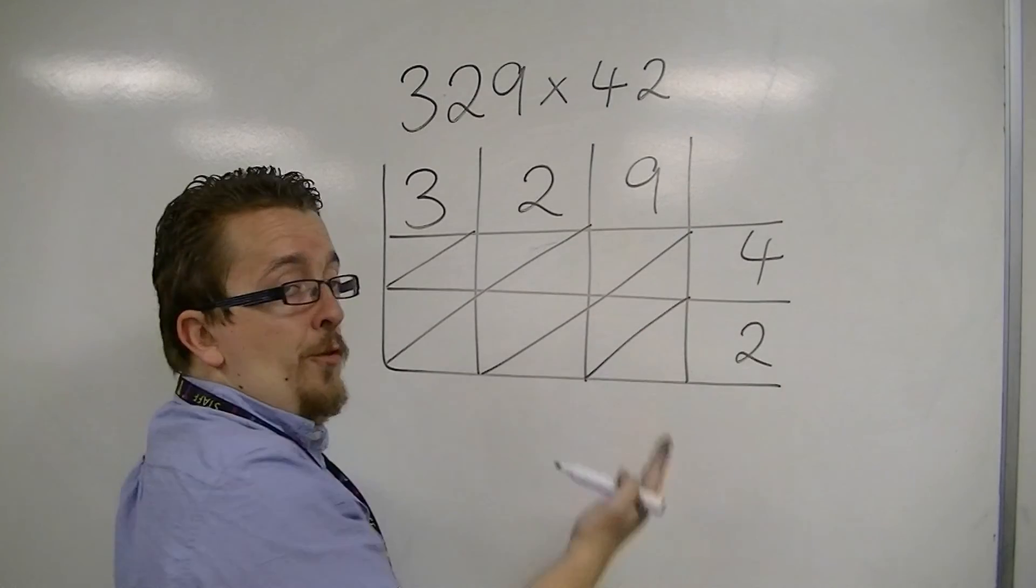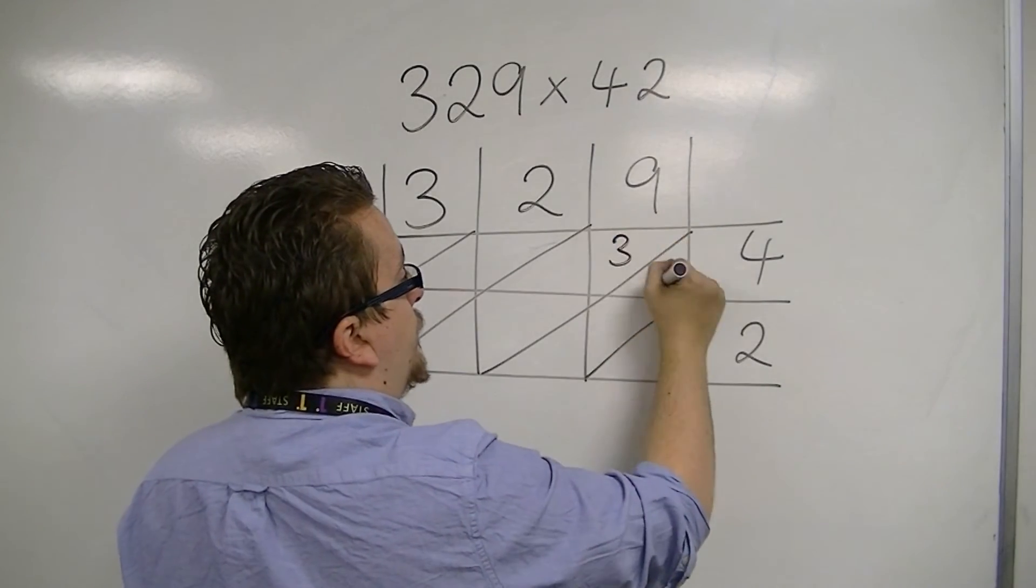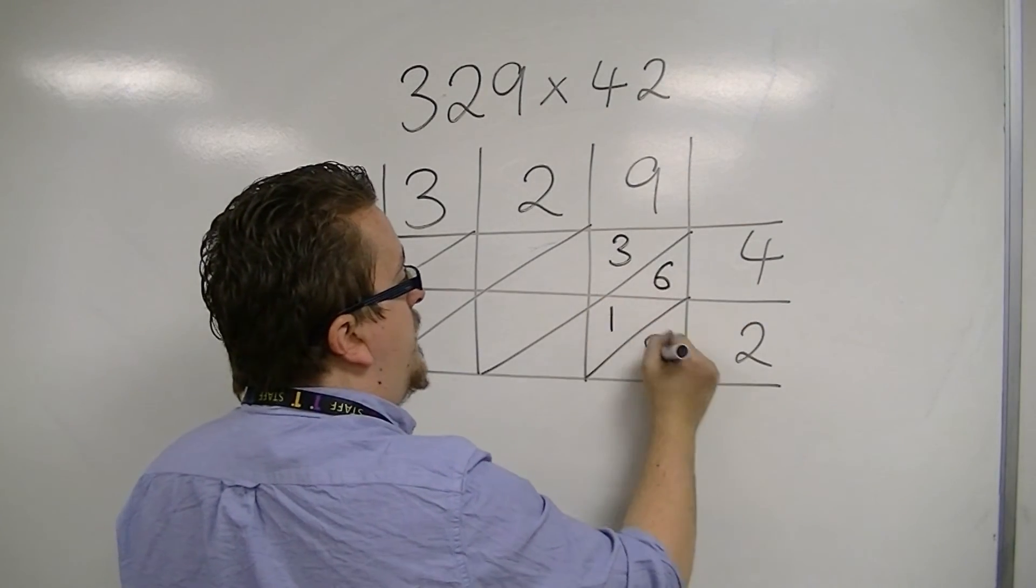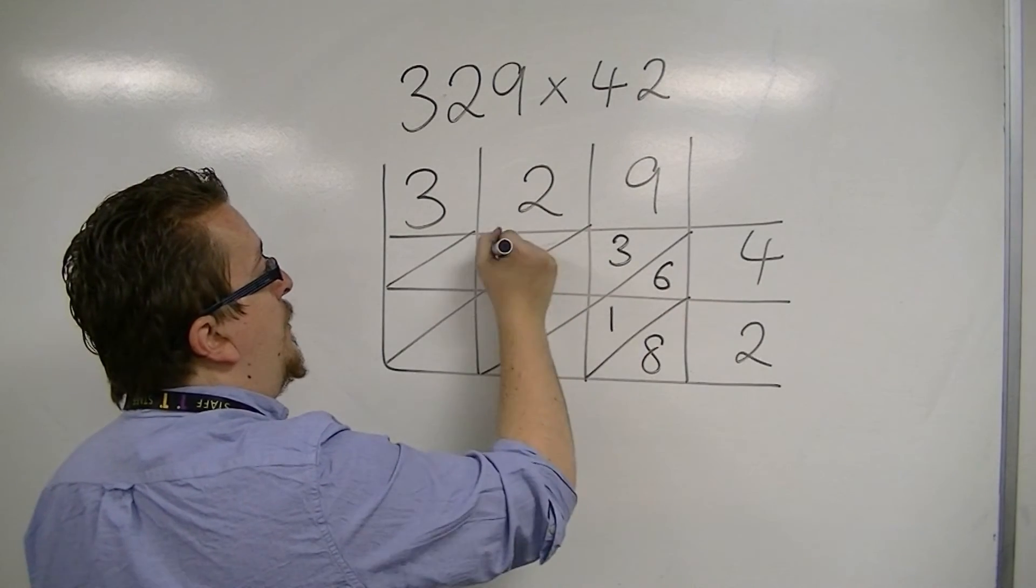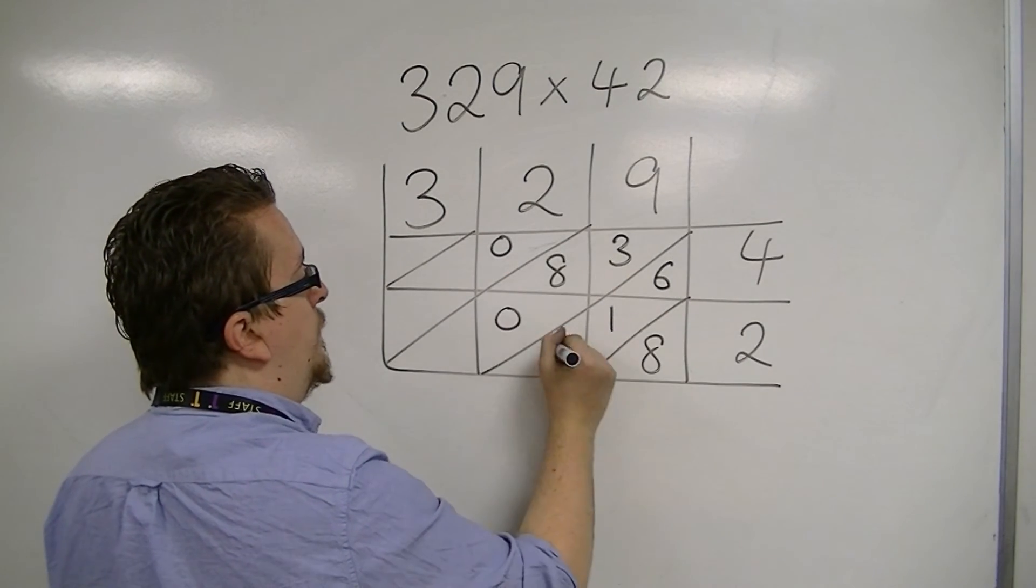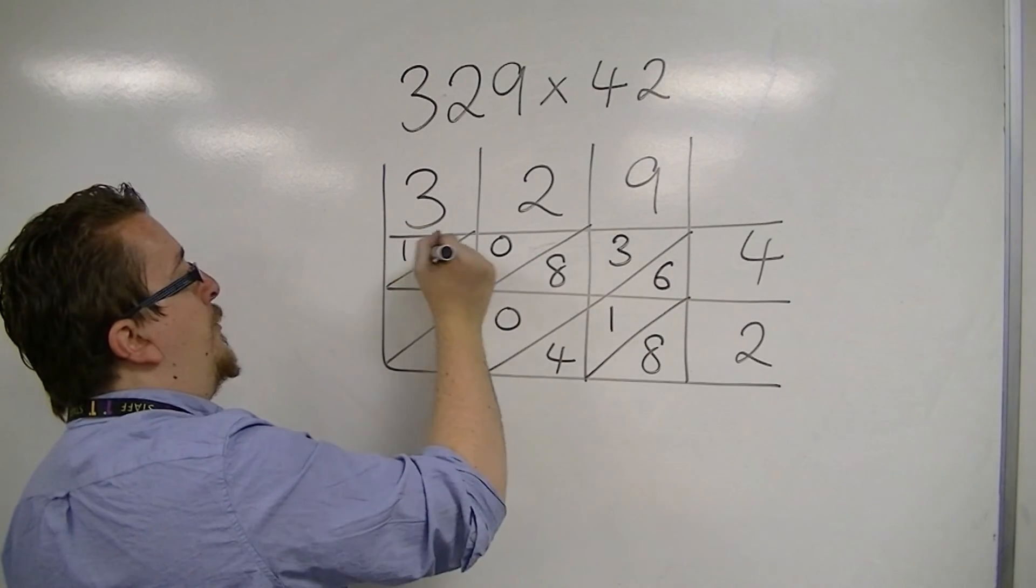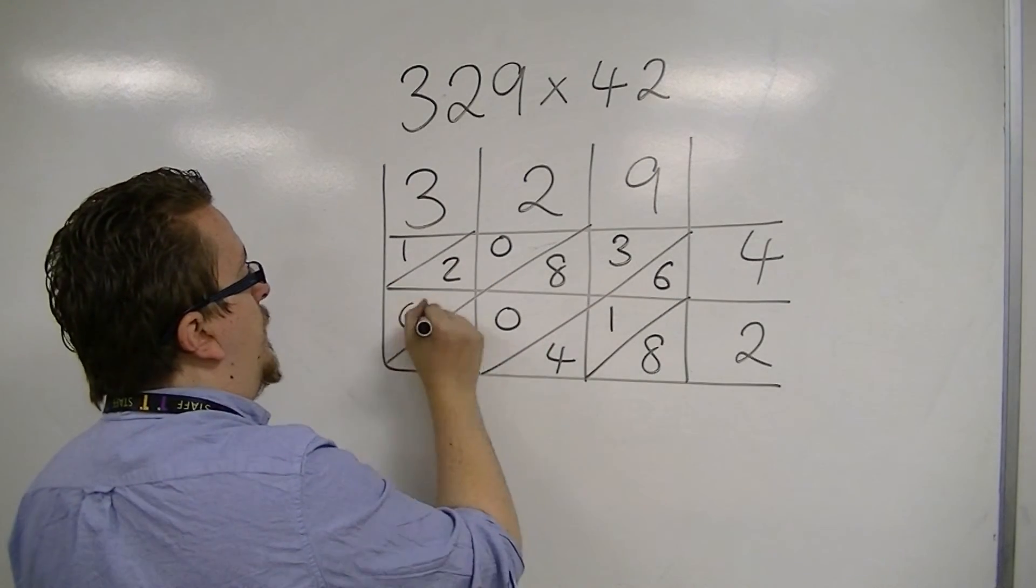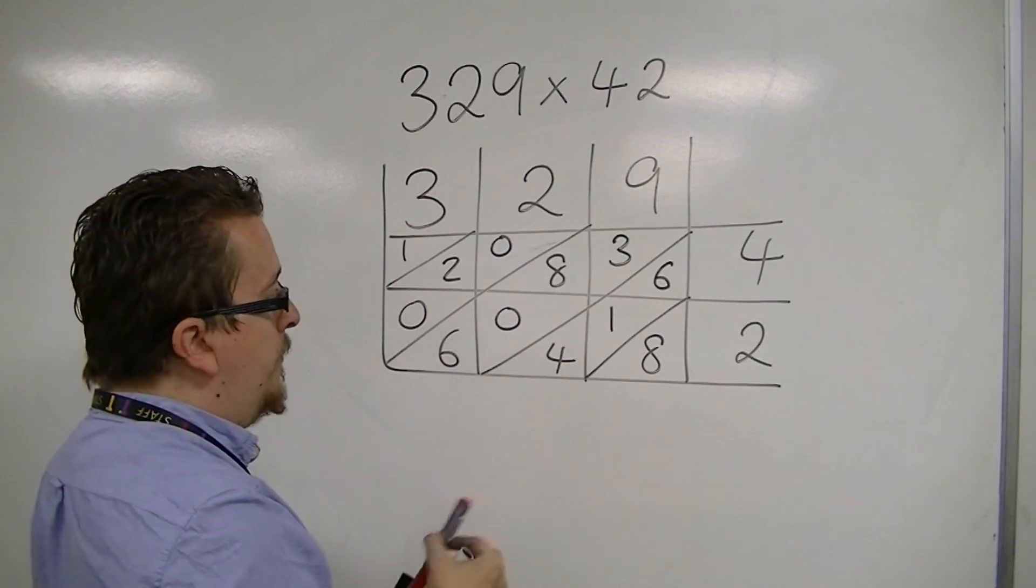We have 9 times 4 is 36. 9 times 2 is 18. 2 times 4 is 8. 2 times 2 is 4. 3 times 4 is 12. 3 times 2 is 6. So, our diagonals are these.